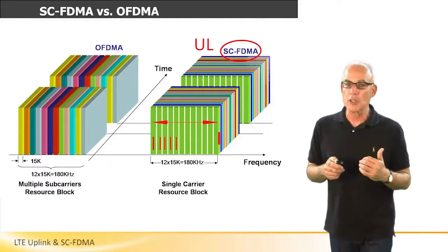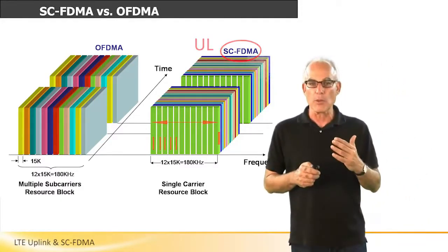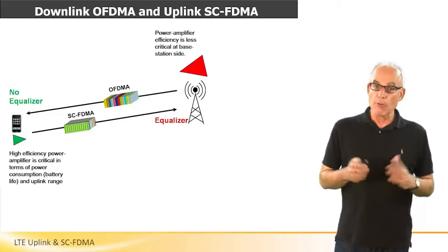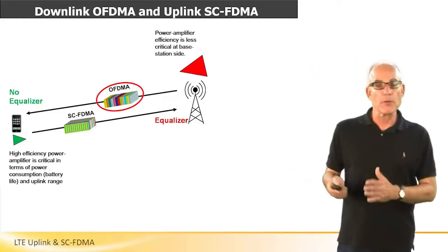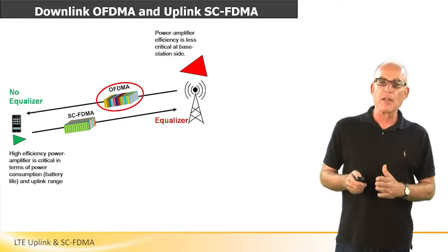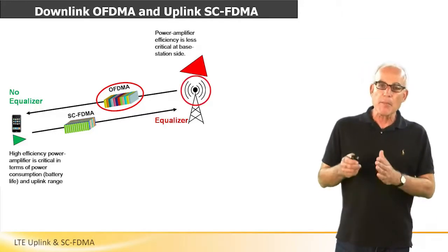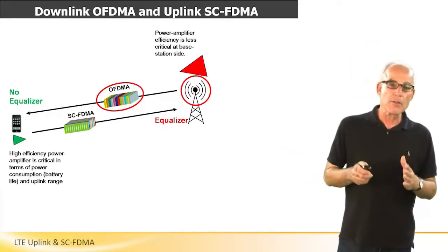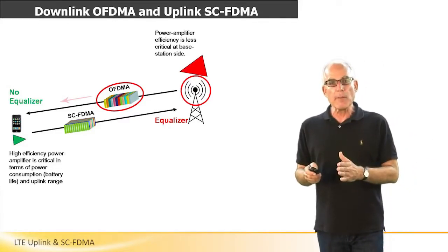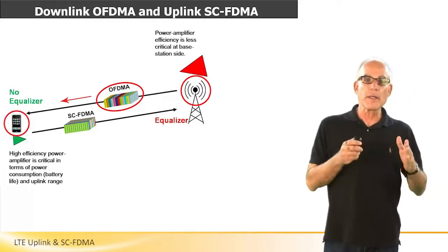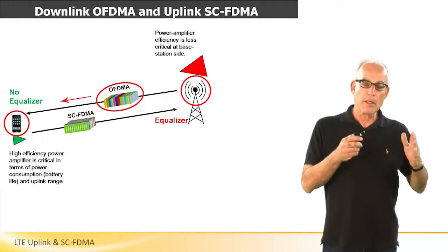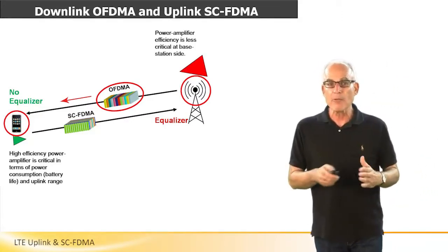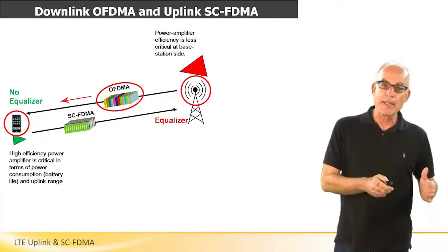This brings us back to a situation where we need to deal with short symbols. LTE uses two separate methods for the uplink and the downlink. For the downlink, OFDMA is used — it is less efficient in terms of power amplifier efficiency, but this is less critical since the power amplifier resides at the base station, which is much more tolerant to power consumption and heat dissipation. The handset receiver can cope with multipath and inter-symbol interference without an equalizer, requiring relatively low processing power.